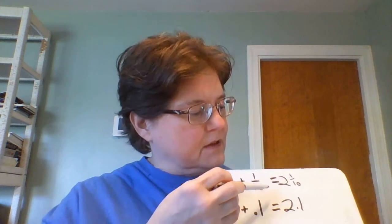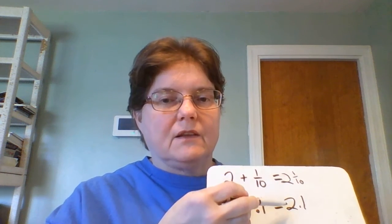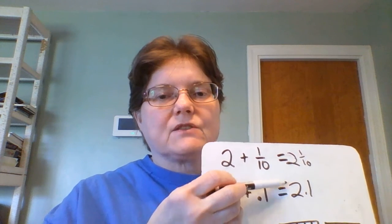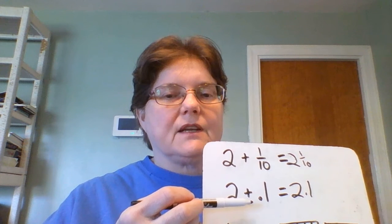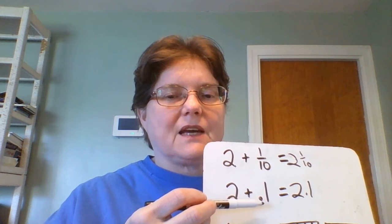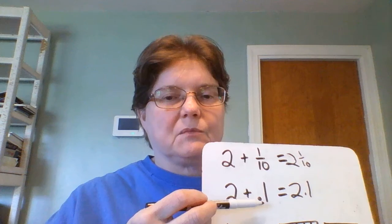So they're the same thing, 2 and 1 tenth. When you have a whole number you're going to put it in front of the decimal point and the number that comes after will stay after the decimal point.